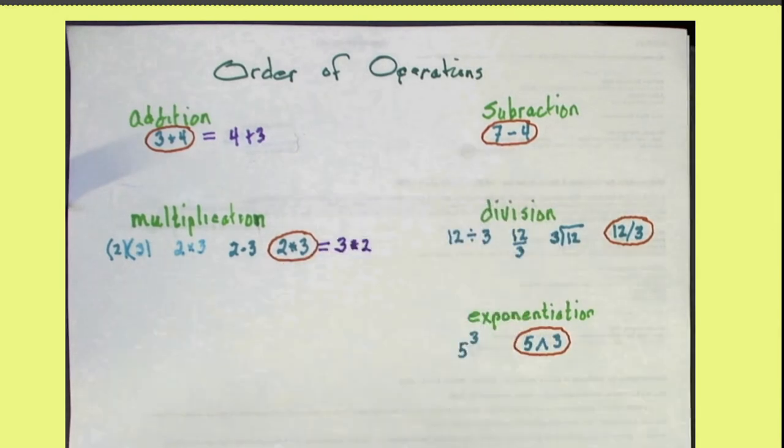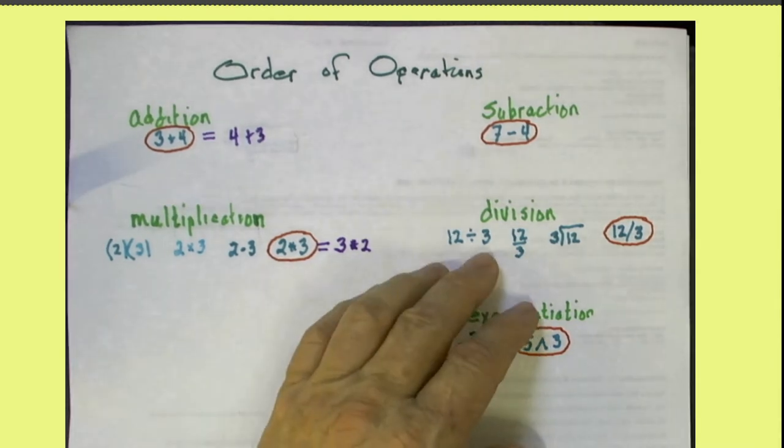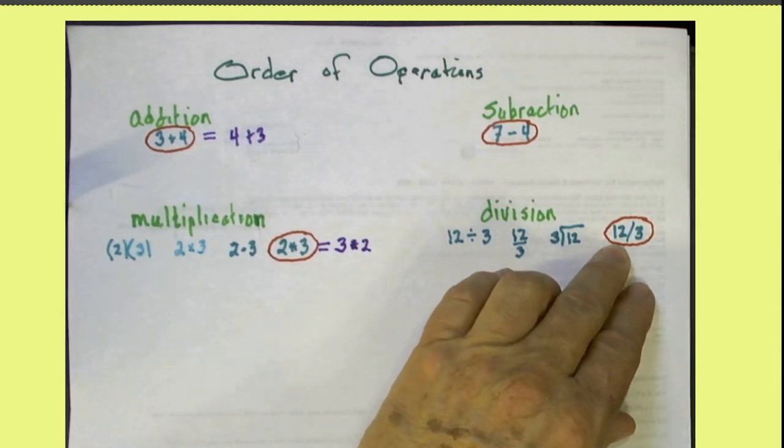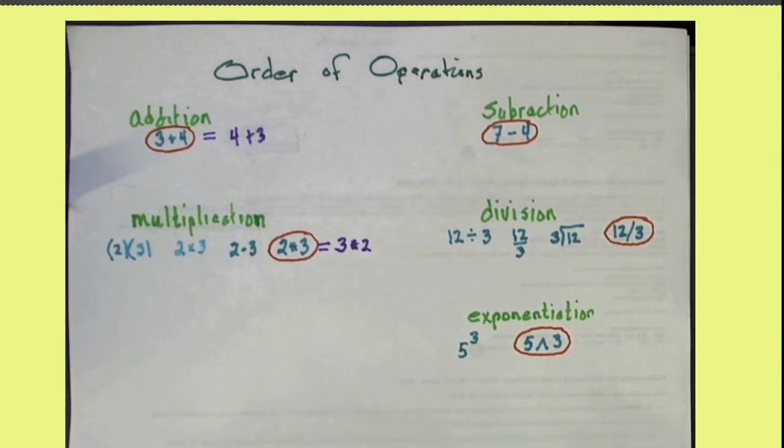Notice that 7 minus 4 is 3, but 4 minus 7 is negative 3. It gives a different result. Notice that 12 divided by 3 is 4, but 3 divided by 12 is one fourth or 0.25 if you wrote it as a decimal.